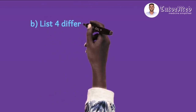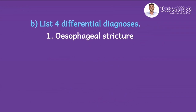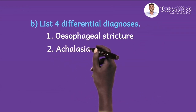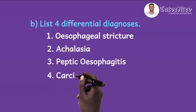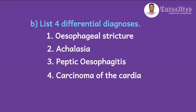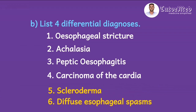The second question asked: list four differential diagnoses of this presentation. These include esophageal stricture, achalasia, peptic esophagitis, carcinoma of the cardia of the stomach, and others such as scleroderma and diffuse esophageal spasms.